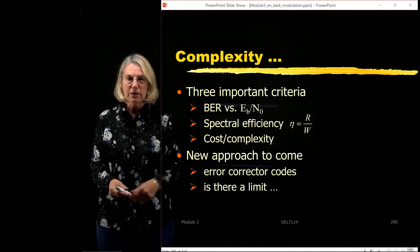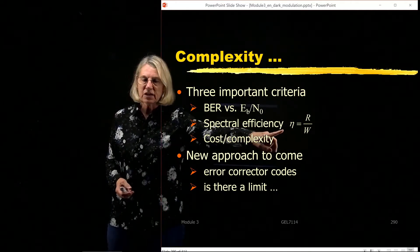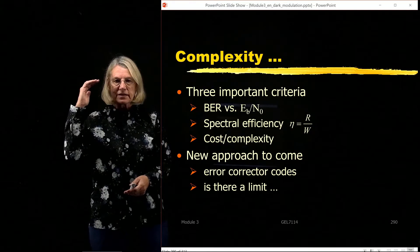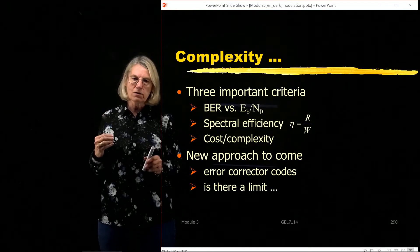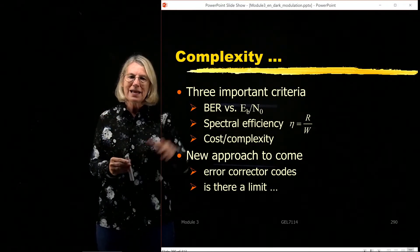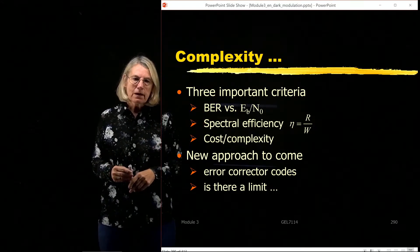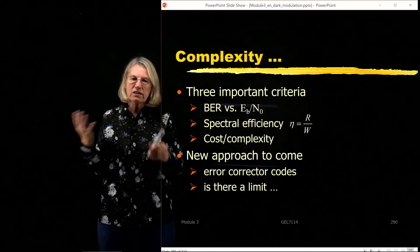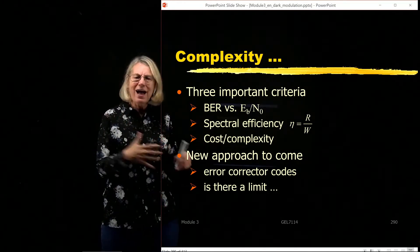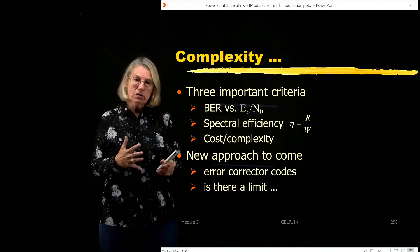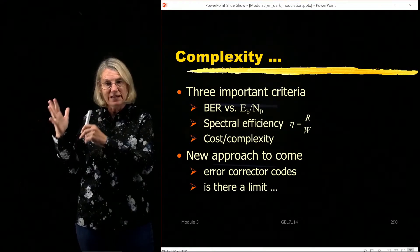So remember, there are three important criteria: the bit error rate versus EB over N0 or power efficiency, spectral efficiency where we've seen the equation as the transmission rate over the occupied bandwidth, and then cost and complexity. We know that we can throw cost or complexity at the problem and try to get benefit from these two other criteria. For instance, we know there is this bandwidth power tradeoff we've seen between the QAM choice and the FSK choice. FSK uses a lot of bandwidth, but can go for very low EB over N0. The opposite case, I can get very spectrally efficient, but need more power.